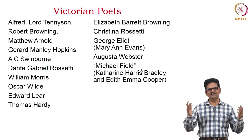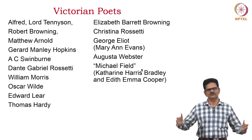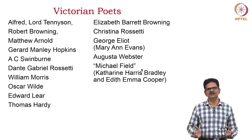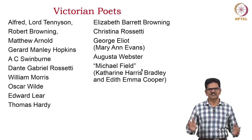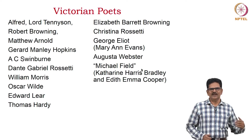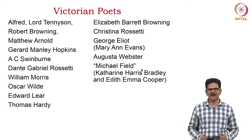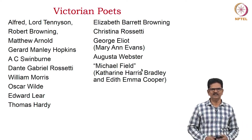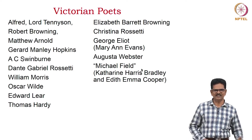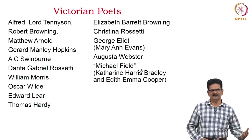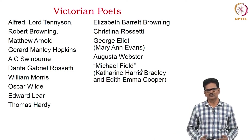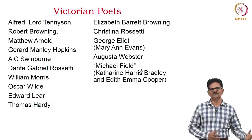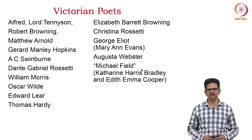Here we have a list of Victorian poets. Of course, there are quite a lot of them, but here are some prominent ones: Lord Tennyson, Robert Browning, Matthew Arnold, Gerard Manley Hopkins, A.C. Swinburne, Dante Gabriel Rossetti, William Morris, Oscar Wilde, Edward Lear, and Thomas Hardy. When we come to Thomas Hardy, we move on to the next century — the twentieth century — as he links Victorian poetry with twentieth century poetry.